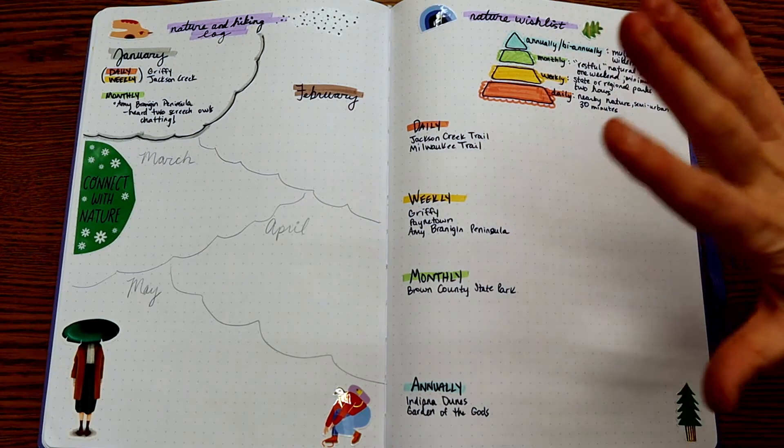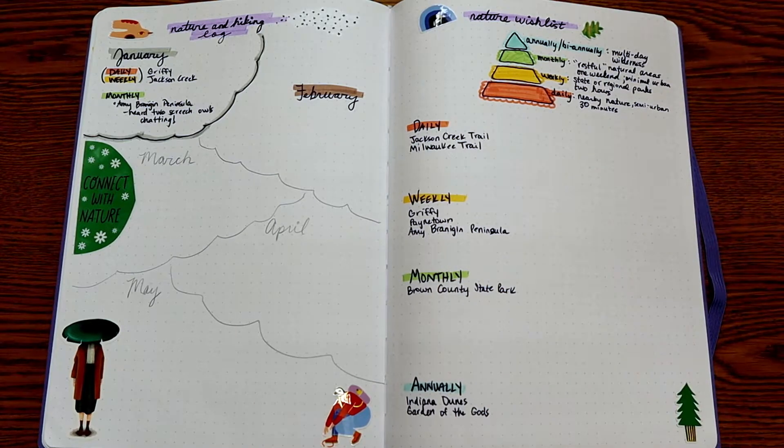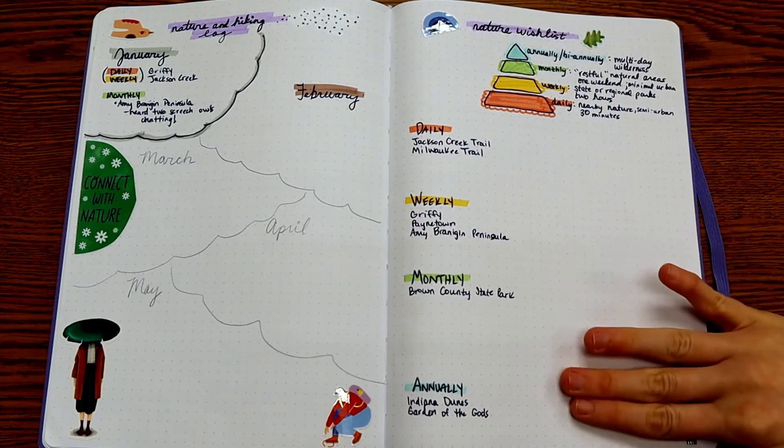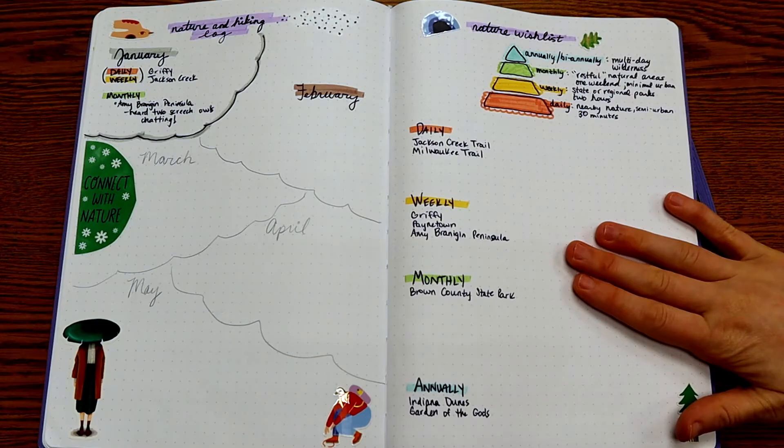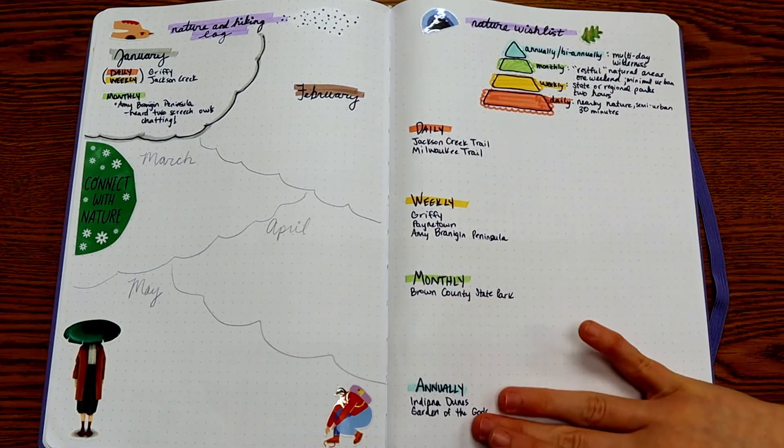So I wanted to list out the different places I could go in nature and that's what this wishlist is for. So as I find out about places or see places, I can add them to my list according to if it would be a daily, a weekly, a monthly, or an annual trip.